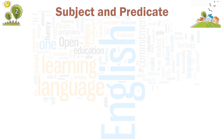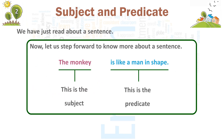Chapter 2: Subject and Predicate. We have just read about a sentence. Now let us step forward to know more about a sentence. The monkey is like a man in shape. 'The monkey' — this is the subject. 'Is like a man in shape' — this is the predicate.